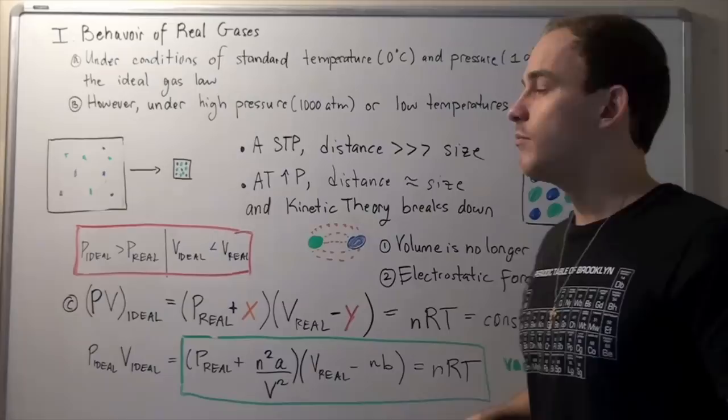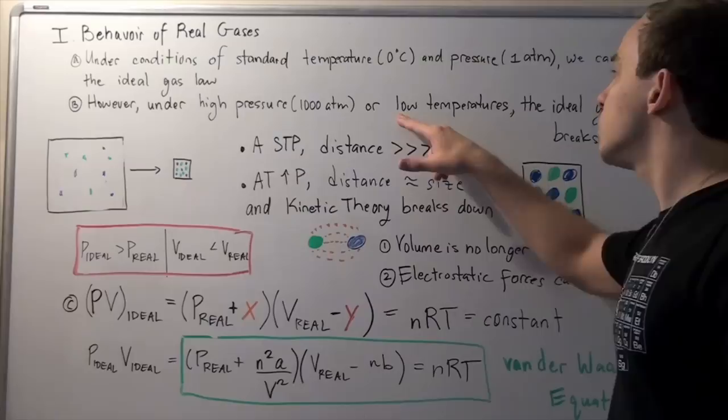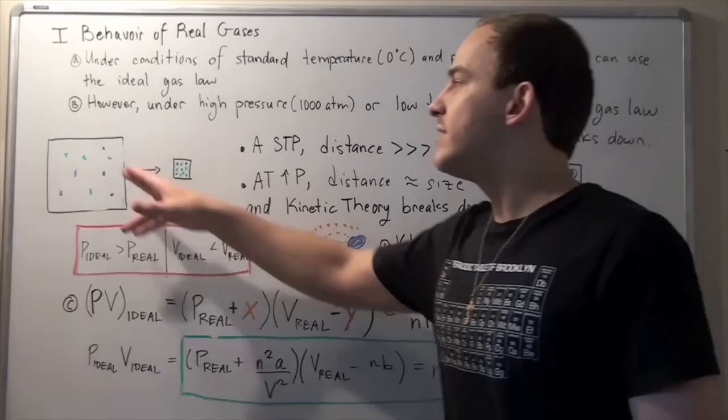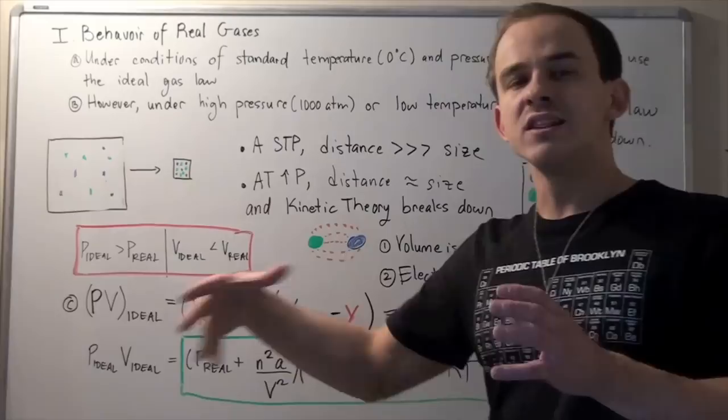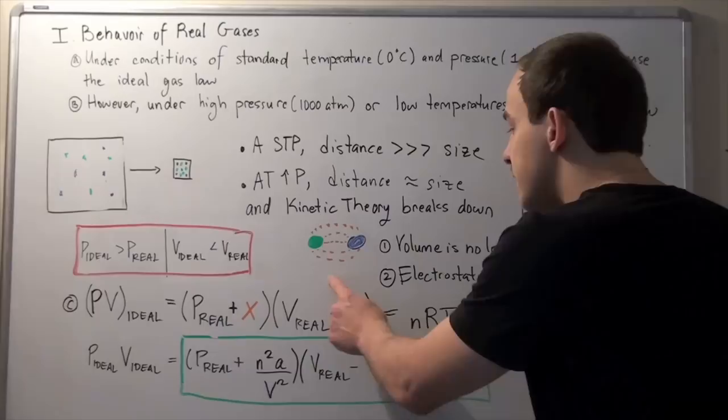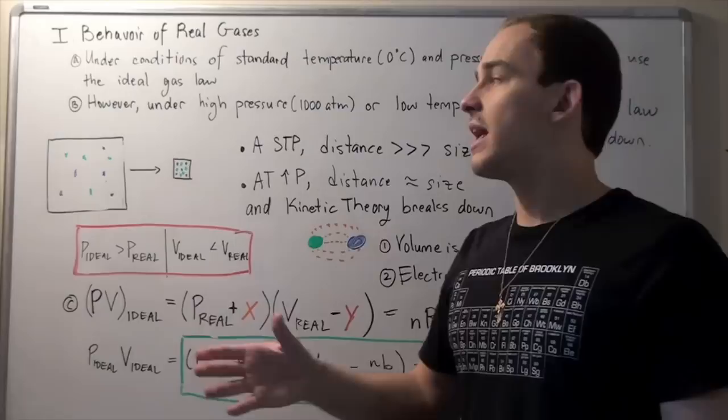We see that at extreme conditions of high pressure, our ideal gas law no longer holds. Now let's see why under low temperatures the ideal gas law also breaks down. If we're at low temperatures, each molecule has a smaller kinetic energy and is therefore traveling with a smaller velocity. They will all drop to the bottom of the container and collect, getting very close together. If they're close, they feel electrostatic forces, and so our kinetic theory also breaks down at low temperatures.